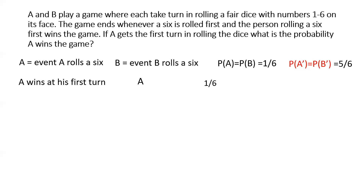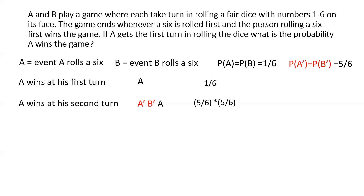The second scenario is A wins at his second turn. For that, A has to not roll a 6 at his first turn — that's A complement — then B has to not roll a 6 at his first turn — that's B complement — and then event A has to happen at A's second turn. So the sequence of events is A complement, B complement, A. The probability of this is 5/6 × 5/6 × 1/6, which equals (5/6)² × 1/6.